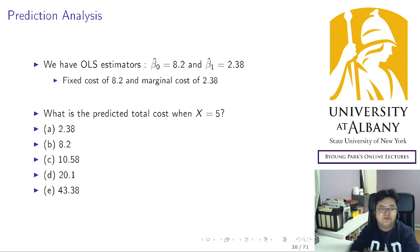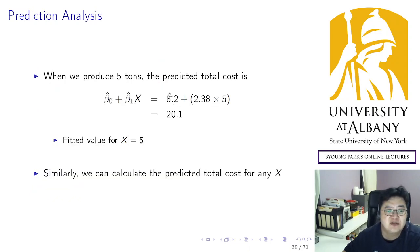Try it by yourself. What is the predicted total cost when you produce 5 units, given those estimators? The answer is calculated this way: fixed cost 8.2 incurs, and then 5 times marginal cost. Then total is 20.1. The fitted value for x equals 5 is 20.1.